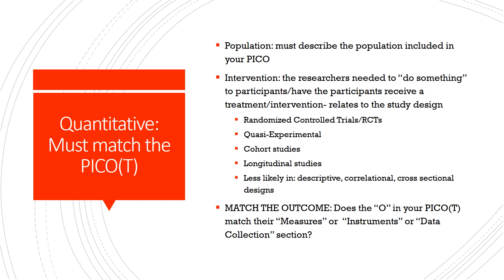Also make sure the outcome — the O — in the study matches the O in your PICO. Look at what they measured, maybe before and after the intervention. This will often be in a section titled 'Measures' or 'Instruments.' Studies very rarely measure just one thing — they might measure anxiety, depression, self-efficacy, confidence, heart rate, blood pressure, height and weight. Just one of those needs to match your PICO question. So the outcome, intervention, and population must all match your PICO question.